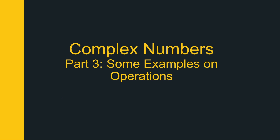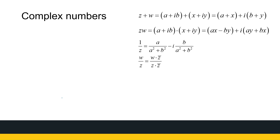In part two of complex numbers, we looked at defining how to add, subtract, and multiply complex numbers, and we looked at the multiplicative inverse. Now we're going to look at some examples using all of these skills. To summarize, if Z equals A plus iB and W equals X plus iY, this is how addition and multiplication are defined.